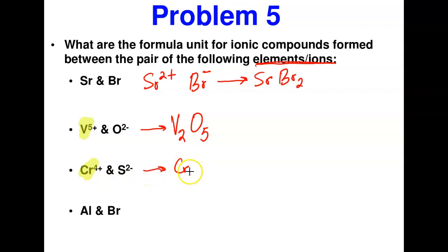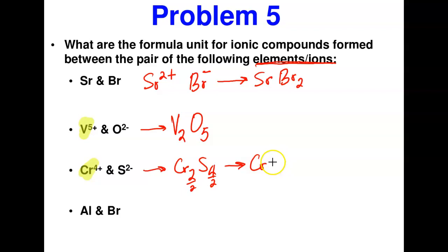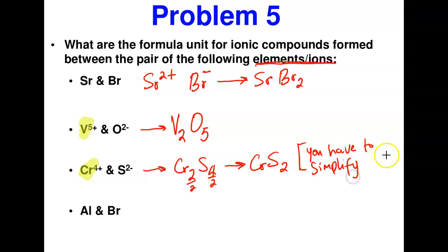For chromium and sulfide: chromium has a specified charge and sulfide (group 6) is 2−. Swapping gives Cr₄S₂ initially — but this can be simplified. You must always simplify ionic compound formulas to the minimum ratio. Dividing by 2: Cr₂S₁, written as CrS₂ — wait, dividing both subscripts by 2 gives Cr₁S₁, written as CrS. That is the correct simplified formula. Note: you can only simplify formulas for ionic compounds, not covalent ones.